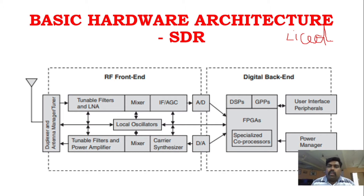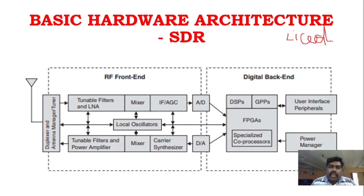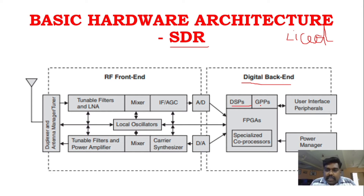Regarding SDR, cognitive radio, and architecture — the evolution of SDR, software defined radio. First you have to understand the digital radio block diagram. In the SDR architecture, you can see the RF front end and digital back end, which includes DSPs, GPPs, and FPGAs — that is, digital signal processors, general purpose processors, and field programmable gate arrays. This involves a lot of processing.